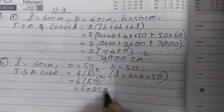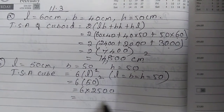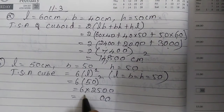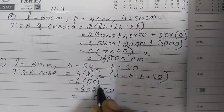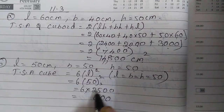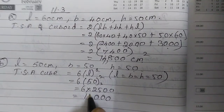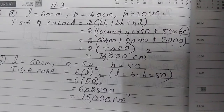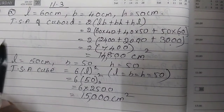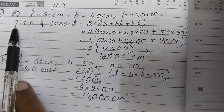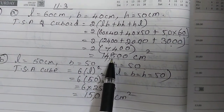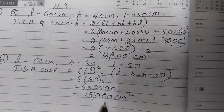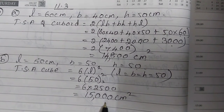Calculating: 6 × 50² = 6 × 2500 = 15,000 cm². So the total surface area of the second box (cube) is 15,000 cm².